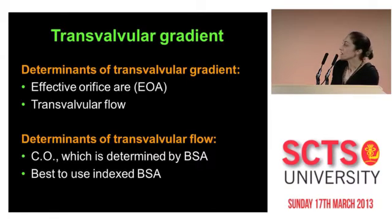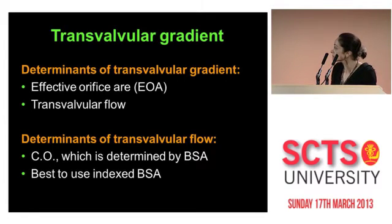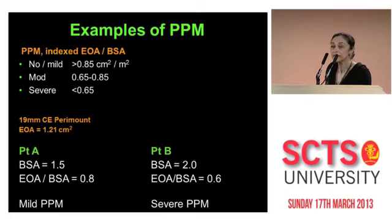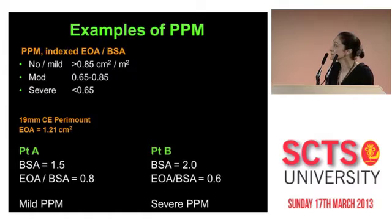So what determines the transvalvular gradient? It's determined by the effective orifice area and transvalvular flow, which in turn is determined by cardiac output and body surface area. Therefore, it is best to index your effective orifice area. If your figure is bigger than 0.85, there is no or mild mismatch. If it is between 0.65 and 0.85, this is moderate. And if it's less than 0.65, it is severe.